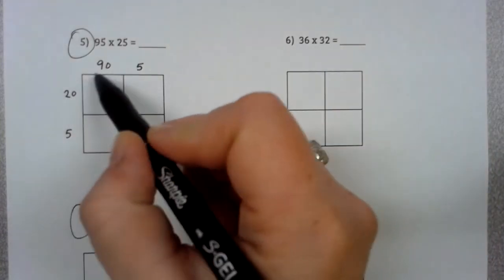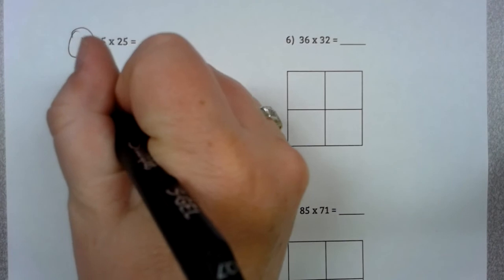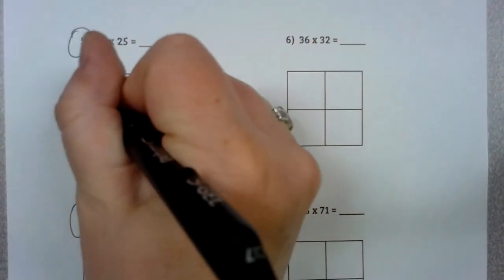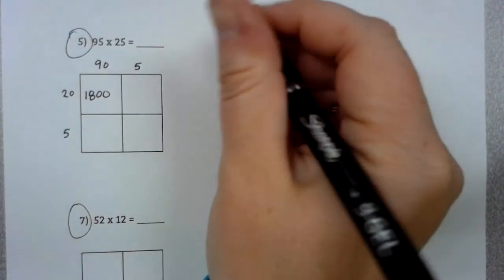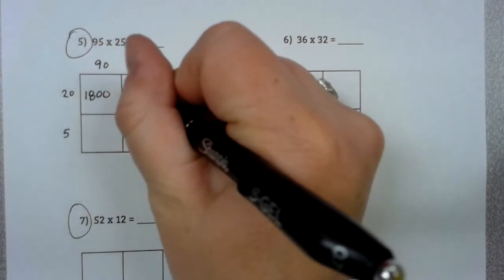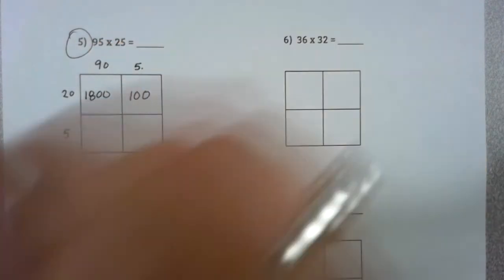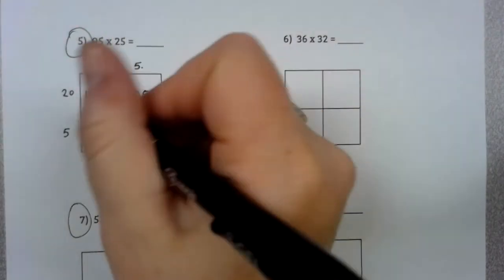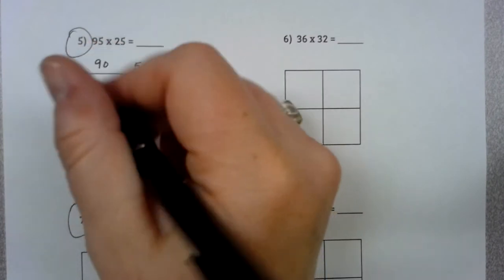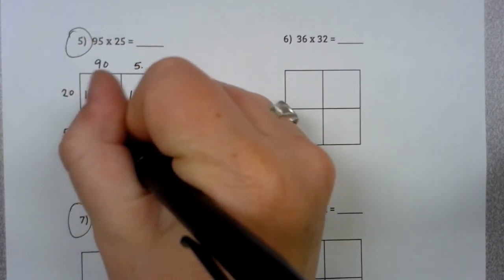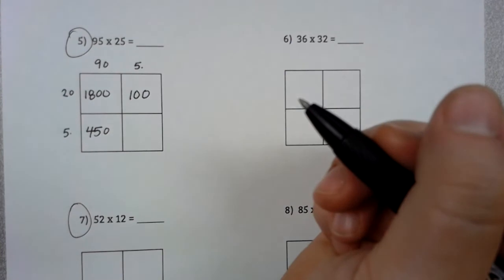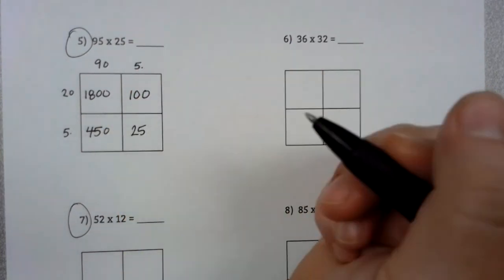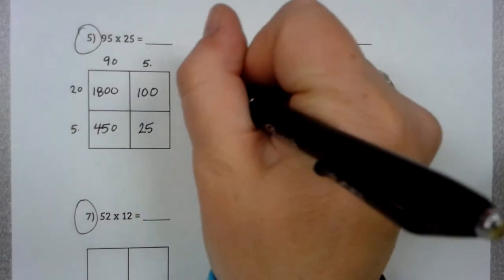I have 95 plus 25. What we do is we break it up to 90 and then 5. And then the 25 breaks up into 20 and 5. If you wanted to go ahead and break the numbers up first and then go back and do the work, that's fine with me. It's just however you want to do it. So now we multiply. 2 times 9 is 18, and then 2 zeros.